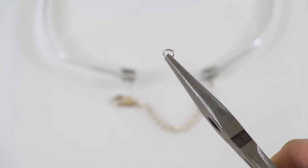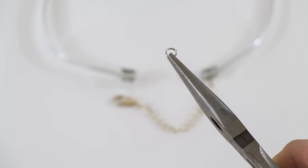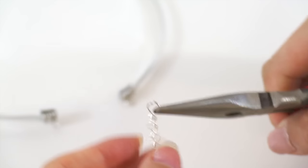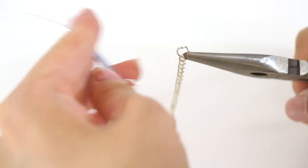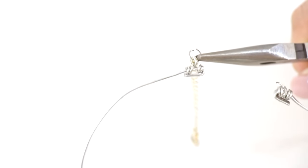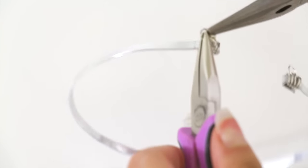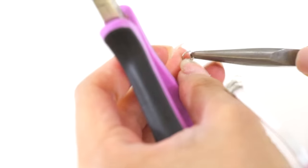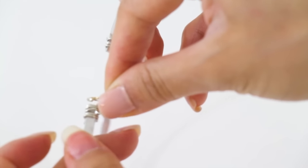To attach the chain, you're going to take a jump ring, and then just attach it to one end. For my chain, it actually came with a clasp already on the other end. If you don't have one, make sure you do attach a clasp, or else you're going to really struggle to put this choker on. And then finally, just hook on the other end to the other jump ring that you attached before, and you are done the choker.